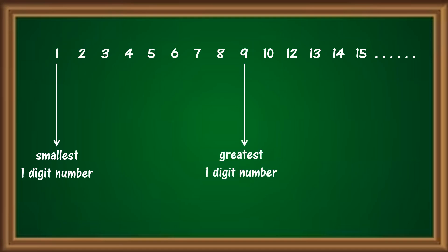And after 9 comes 10, which is the first number with 2 digits, which makes it the smallest 2-digit number.